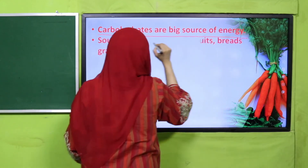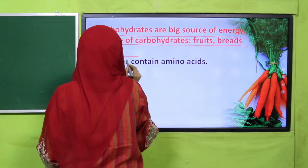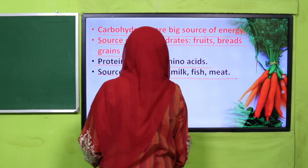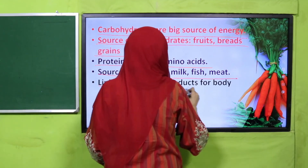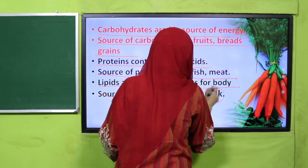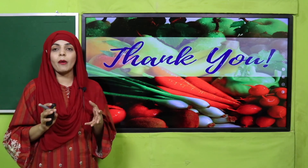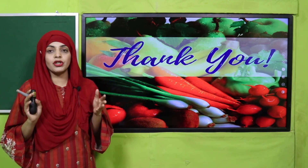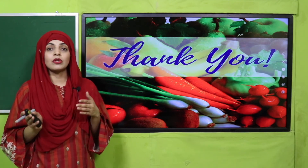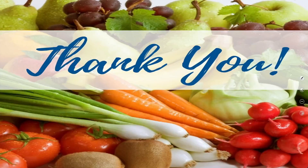What we learned today: carbohydrates are a major source of energy — sources include breads and grains; proteins contain amino acids — sources include milk, fish, and meat; lipids are storage products for the body — sources include nuts, fish, and milk. In the next lecture we will discuss the next nutrients. Keep everybody around you safe, have a good day, thank you so much, and Allah Hafiz.